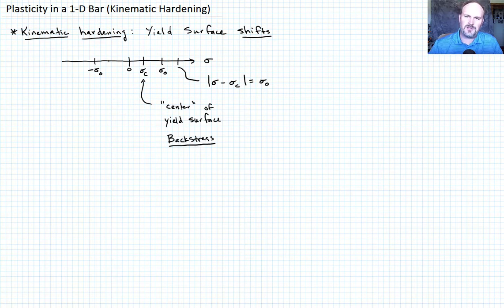So then we ask the question, what happens on the negative end? And if we just shifted the yield surface, then it's going to shift by the same amount. It's going to shift by the back stress. And in that case, we can see that this quantity also looks like sigma minus sigma c equals sigma naught.